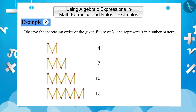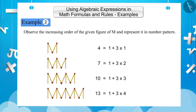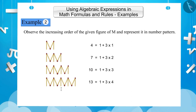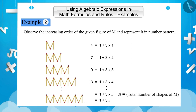We can also show them as follows: 4 = 1 + 3×1, 7 = 1 + 3×2, 10 = 1 + 3×3, and 13 = 1 + 3×4. A similar expression for the nth shape would be 1 + 3×n = 1 + 3n, where n represents the total number of shapes of M.